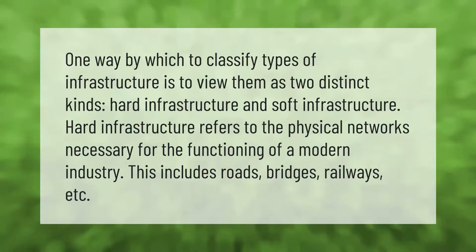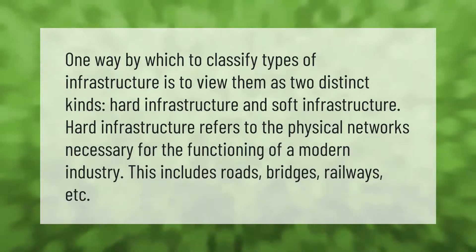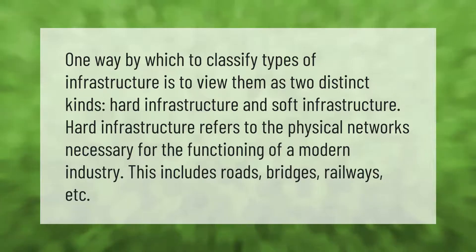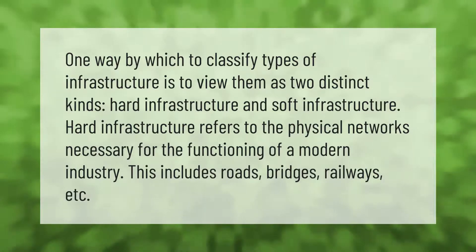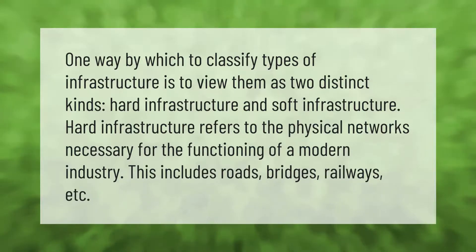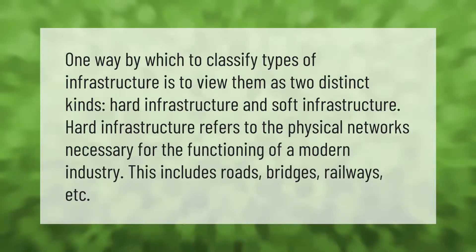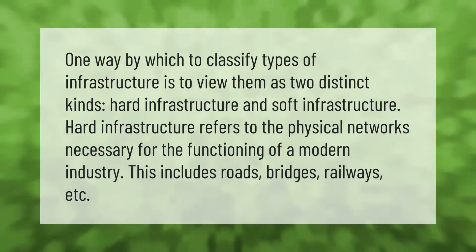One way to classify types of infrastructure is to view them as two distinct kinds: hard infrastructure and soft infrastructure. Hard infrastructure refers to the physical networks necessary for the functioning of a modern industry, and includes roads, bridges, railways, etc.